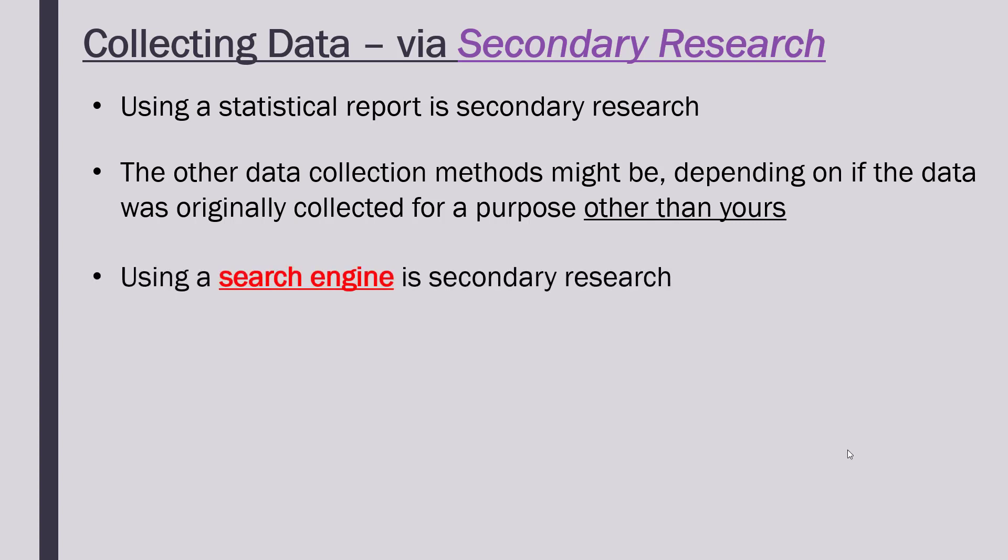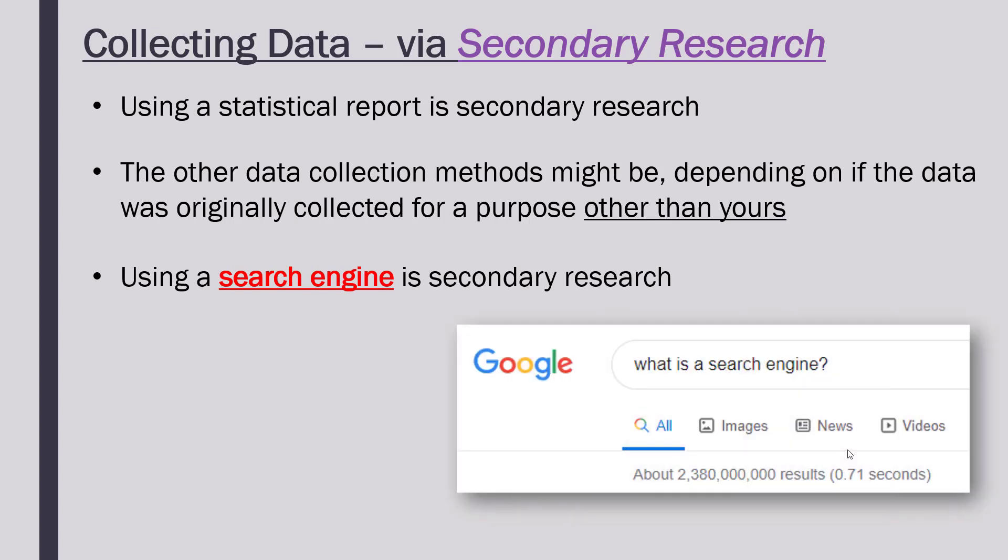There are lots of different potential secondary research methods. One of them we haven't looked at is a search engine - something like Google or Bing, where we can put a query, a question, or anything into our search bar and it will find relevant results for us. Much easier than having to learn loads of website addresses; it does the work for us.